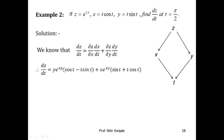∂z/∂x keeping y constant gives y·e^(xy). Now dx/dt: since x = t·cos(t), using the product rule, dx/dt = cos(t) + t(−sin(t)). ∂z/∂y treating x as constant gives x·e^(xy). And dy/dt: since y = t·sin(t), using the product rule, dy/dt = sin(t) + t·cos(t). We then substitute x = t·cos(t) and y = t·sin(t).